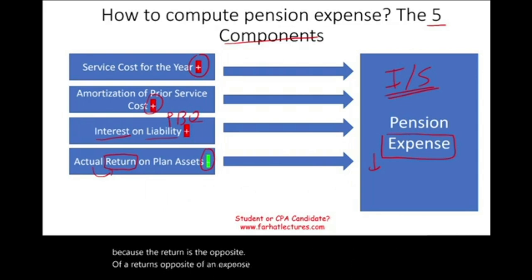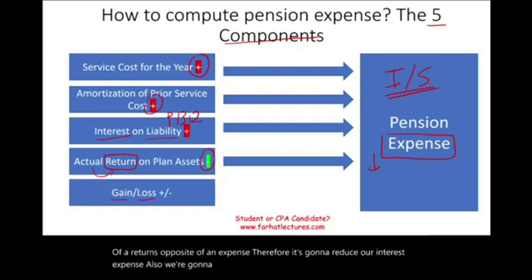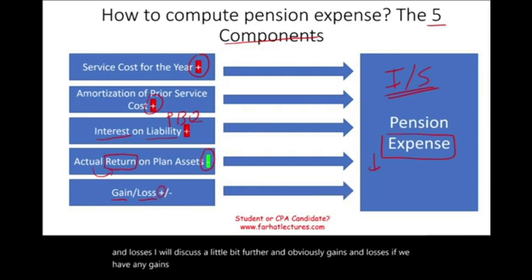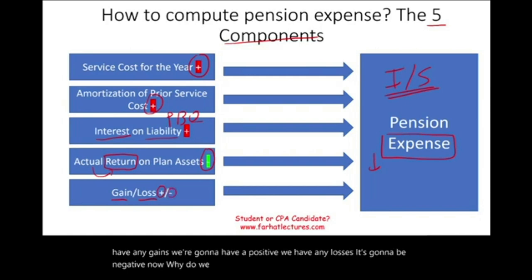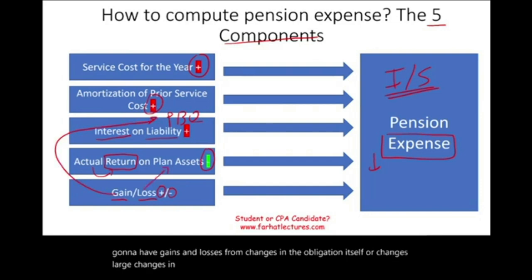The fifth component is gains and losses. If we have gains, they're positive; if we have losses, they're negative. We have gains and losses from changes in the obligation itself or large changes in the plan assets. We'll discuss those later on, but those are the five components.